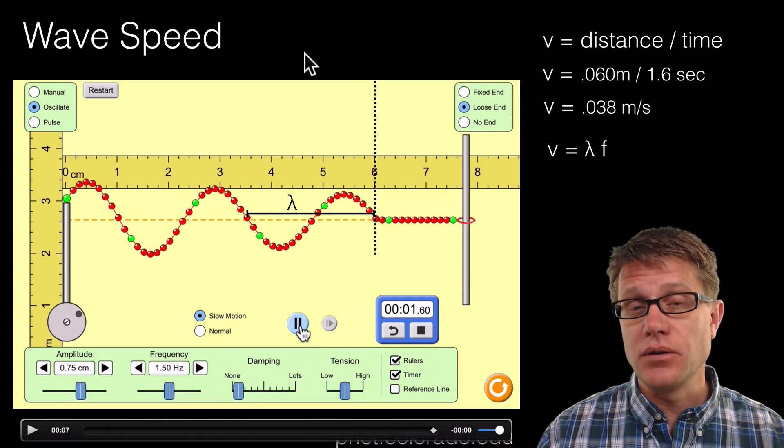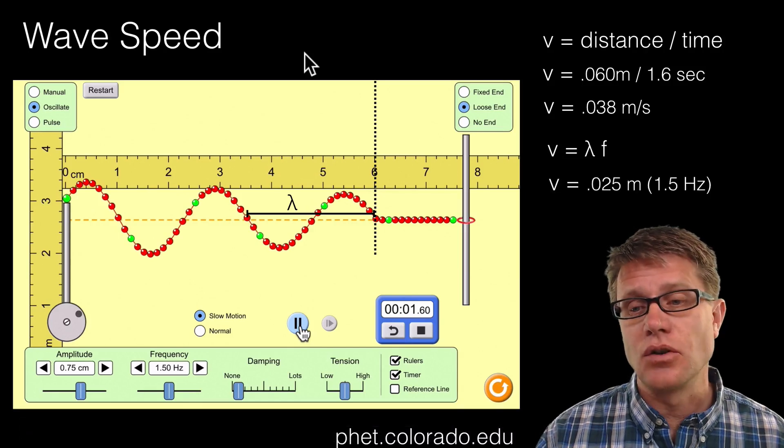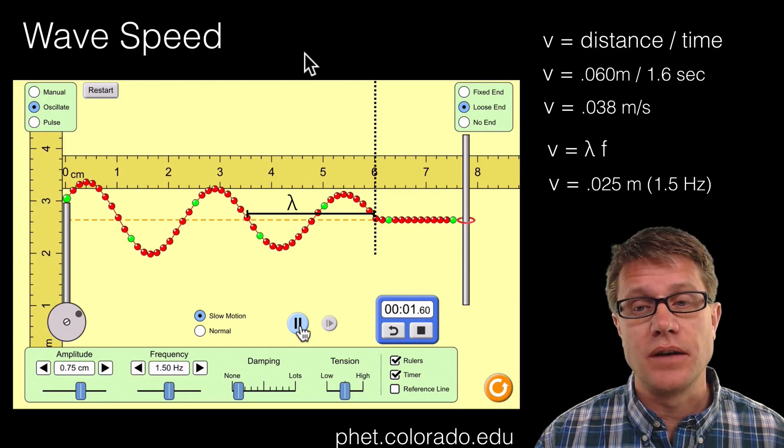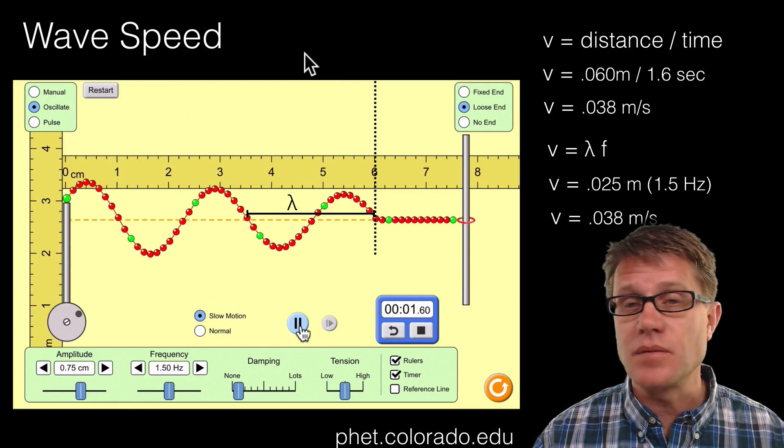And so if I know the frequency and I know the wavelength, I know the velocity. And let's make sure that that matches. So my wavelength is 0.025 meters. My frequency is 1.5 hertz. And so it is going to be 0.038 meters per second. So same thing.